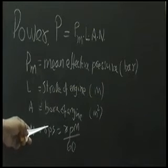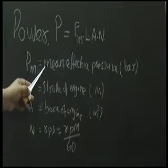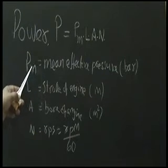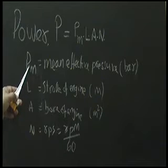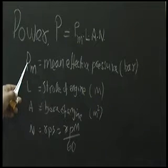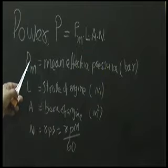So how do we find out the mean effective pressure? That is found out from the indicator card or the power card. While calculating the mean effective pressure from the power card, we will have to keep in mind a few things that we will have to note down.